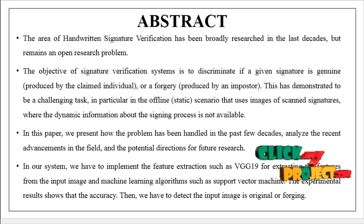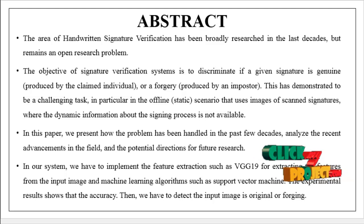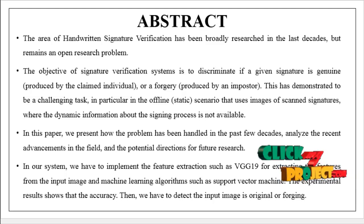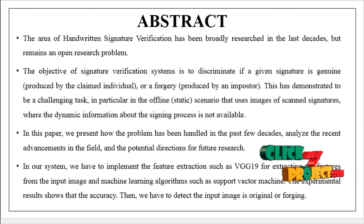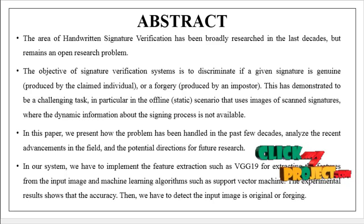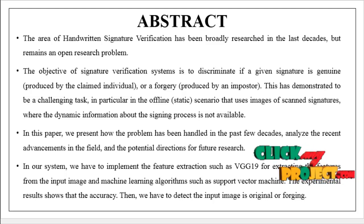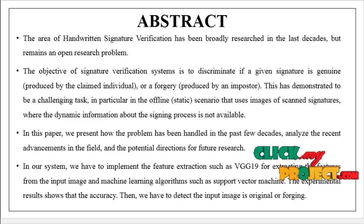In this paper, we present how the problem has been handled in the past few decades, analyze the recent advancements in the field, and potential directions for future results. The system is developed using VGG-19 for extracting features from the input image, and implements a support vector machine algorithm for predicting whether the given signature is genuine or forgery. The experimental results show performance metrics including accuracy. This is the overview of our process.